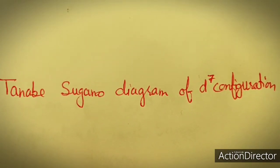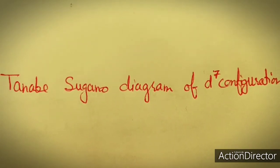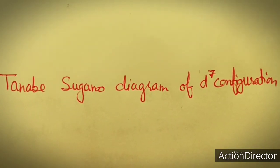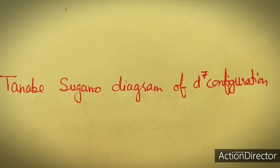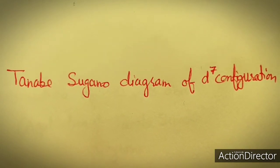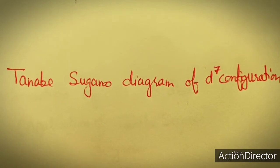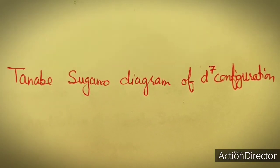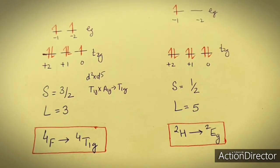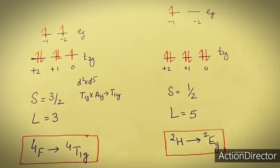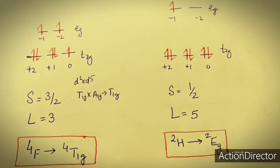In this lecture we will construct the Tanabe-Sugano diagram for D7 configuration. For constructing the Tanabe-Sugano diagram for D7 configuration, first of all we have to calculate the ground state terms for weak field as well as strong field complexes. These are the situations for calculating the ground state term for both weak field and strong field D7 configuration complexes.